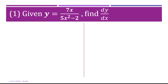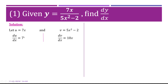Example one: given y equals 7x over 5x squared minus 2, find dy/dx. We let u equal the numerator of the fraction, that's 7x, and v equal 5x squared minus 2. Differentiating each one: if I differentiate u with respect to x, du/dx equals 7. If I differentiate v with respect to x, dv/dx equals 10x.